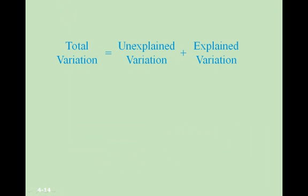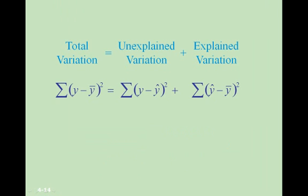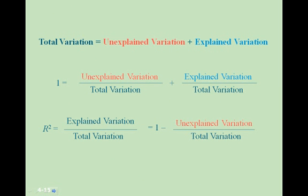It can be shown that the total variation equals the unexplained variation plus the explained variation. If we divide both sides by the total variation, we get 1 on the left side. Then, subtracting the unexplained variation over total variation from both sides, we get that r squared equals the explained variation over the total variation, which is 1 minus the unexplained variation divided by the total variation.